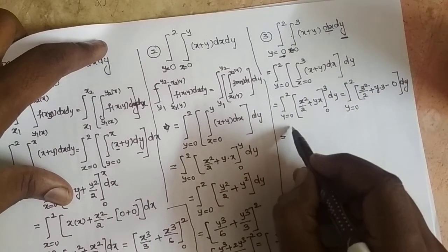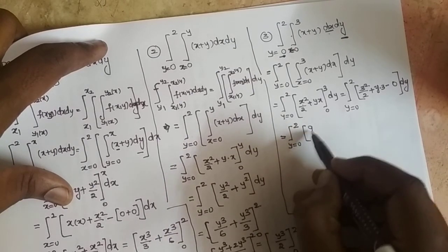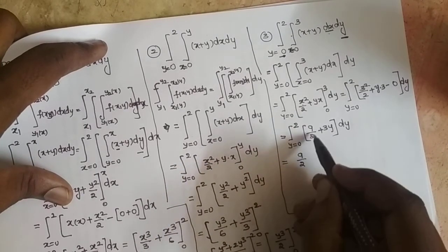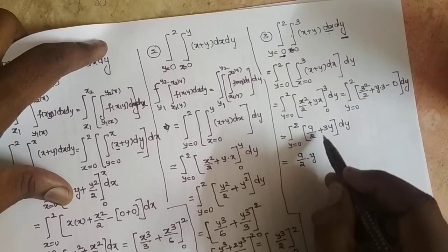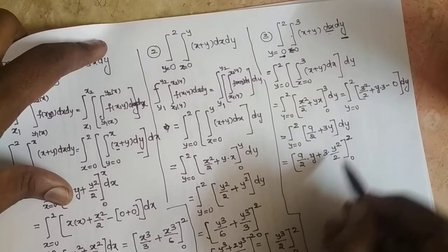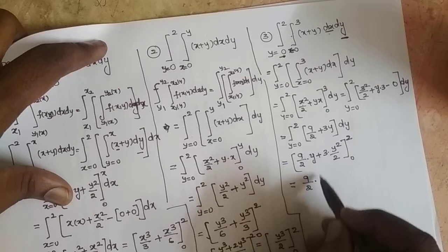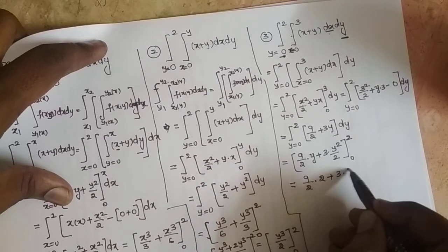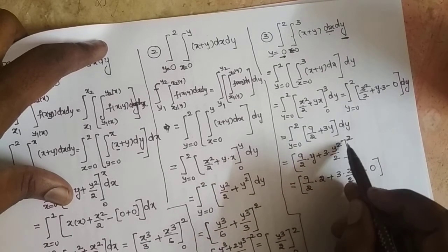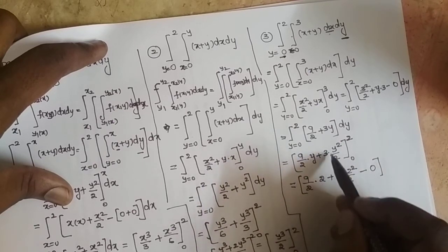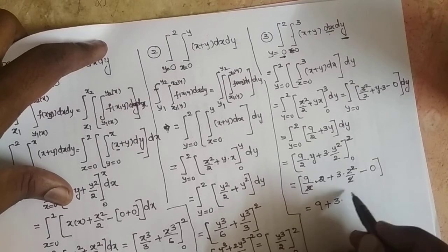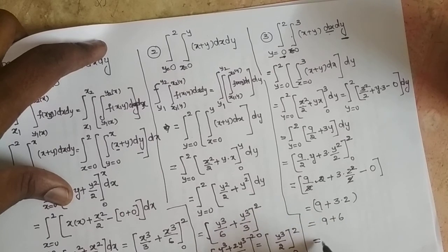Simplifying: integral y = 0 to 2 of (9/2 + 3y) dy. Now integrating with respect to y: 9/2 is constant so integral is 9y/2, and integral of 3y is 3y²/2, evaluated 0 to 2. Substituting y = 2: 9/2 · 2 + 3 · (2²/2) = 9 + 3·2 = 9 + 6 = 15. The second limit gives 0. So the answer is 15.